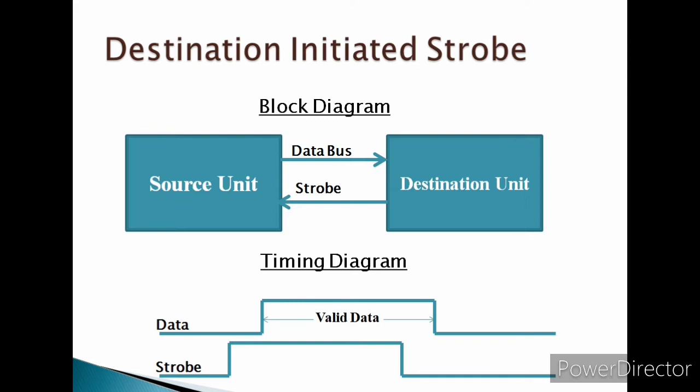The falling edge of the strobe pulse can be used again to trigger a destination register. The destination unit then disables the strobe, and the source removes the data from the bus after a predetermined time interval.